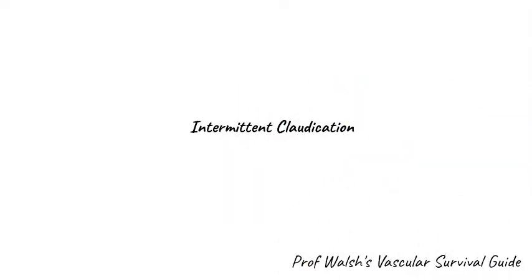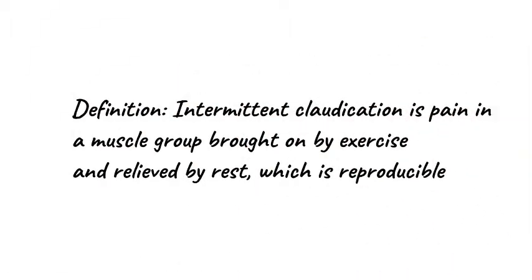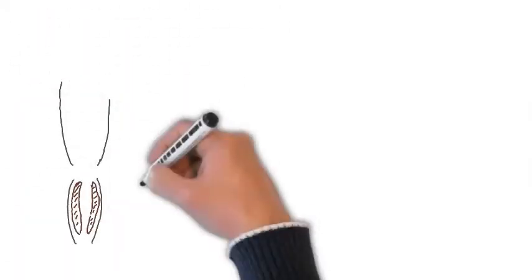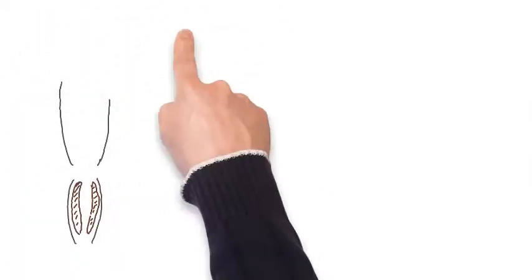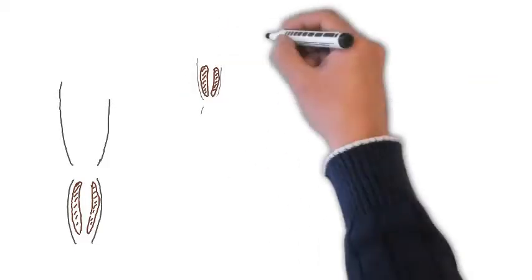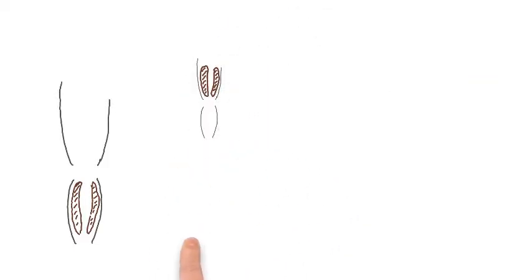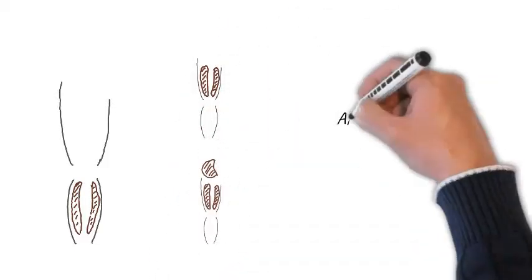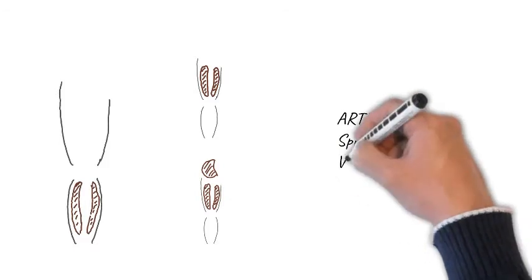In this video we're going to talk about intermittent claudication. We define claudication as pain in a muscle group brought on by exercise and relieved by rest, which is reproducible. By far the most common location for claudication pain is the calf muscles, but in a small proportion of patients the pain will be felt in the thigh or in the buttock.